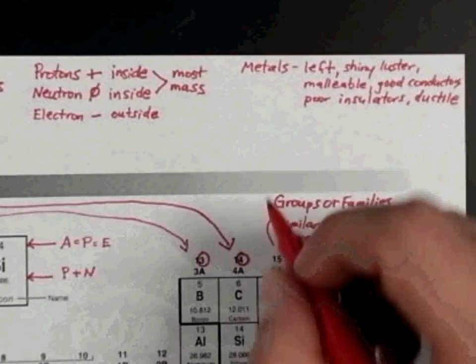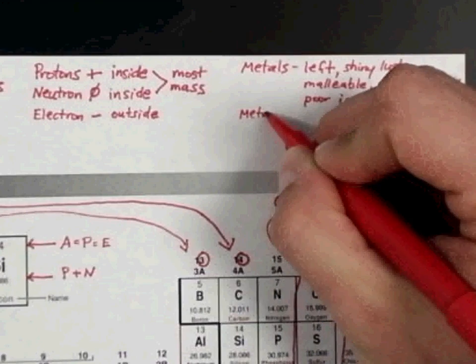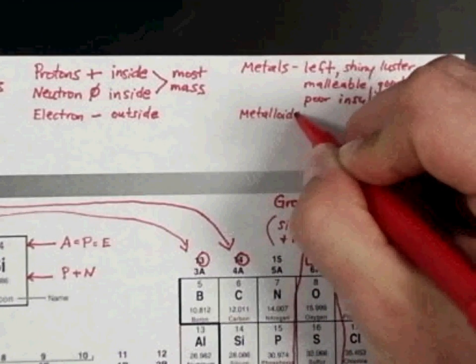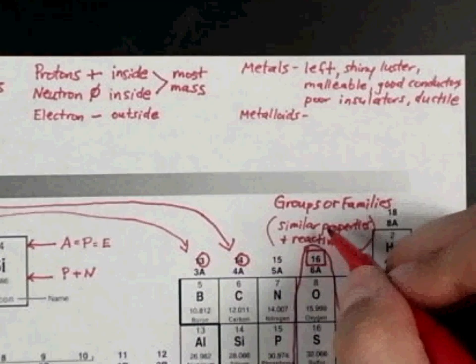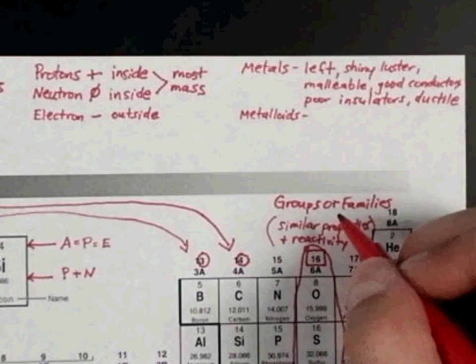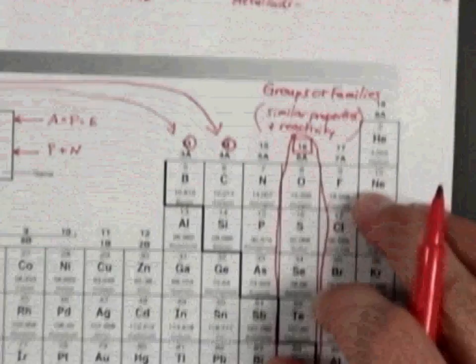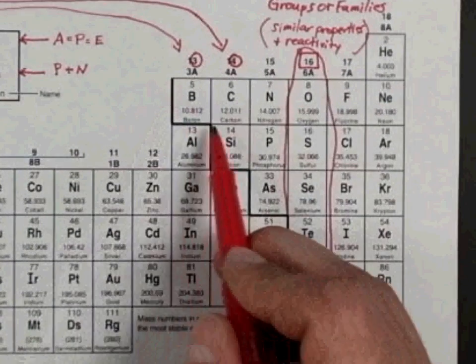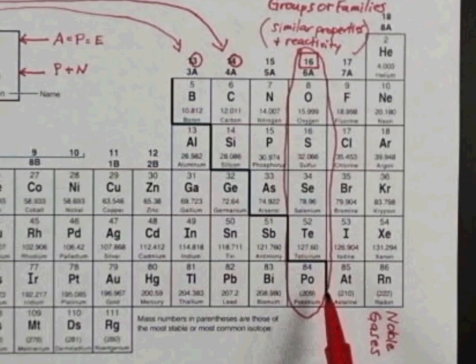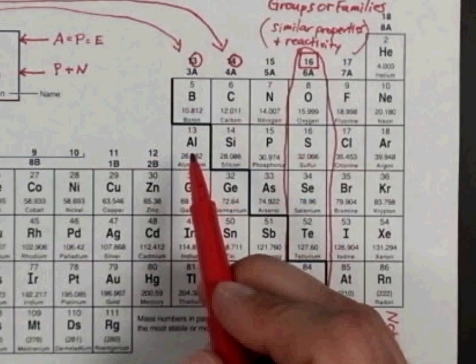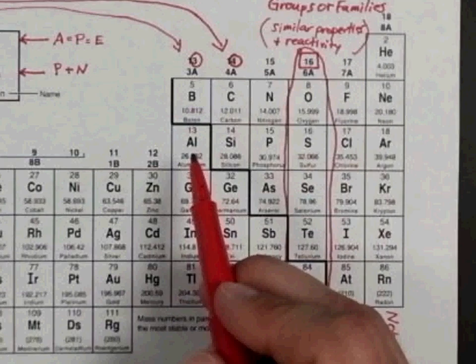All right. Next, we're going to talk about the metalloids. And metalloids are found usually touching the staircase on the periodic table. So they're touching that black line that looks like a staircase on the periodic table. And all those are metalloids except for one, which is aluminum. And that's just one you have to remember is a metal.